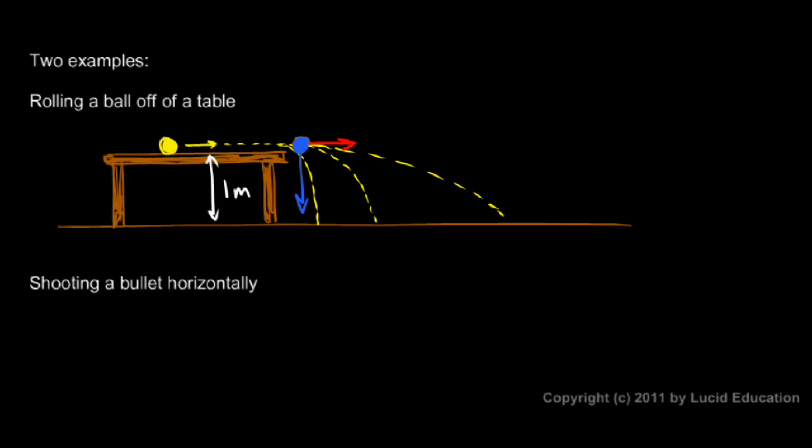What I'm claiming is that both will hit the ground at the same time. If you were to track them, the blue ball would be at this height when the yellow ball is right here. And then the blue ball would be at this height when the yellow ball is right here. And the blue ball would be at this height when the yellow ball is right here. And the blue ball would hit the ground right when the yellow ball hit the ground over here.